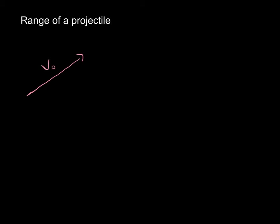Now we're going to look at a more general case to derive a very useful equation. If we take a projectile and launch it at some initial velocity v₀ at an angle θ, we have v₀ in just the x direction and v₀ in just the y direction — the two components of the vector. From the previous video, we know that v₀x = v₀cosθ and v₀y = v₀sinθ.